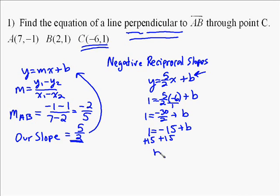So we have a slope of 5 halves, we have a y-intercept of 16, so we know the equation of our line. It's y equals 5 halves x plus 16.